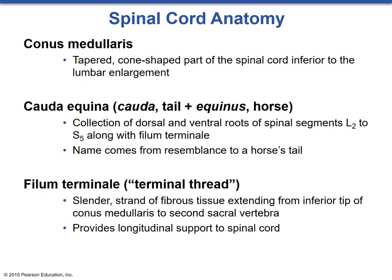Some additional anatomy on the spinal cord: the conus medullaris is the tapered cone-shaped end of the spinal cord found at the inferior end of the lumbar enlargement. The cauda equina is a collection of dorsal and ventral roots of spinal segments from L2 to S5, along with the filum terminale. The name cauda equina comes from its resemblance to a horse's tail. The filum terminale is a slender strand of fibrous tissue extending from the inferior tip of the conus medullaris to the second sacral vertebrae — it is connective tissue, not nerve tissue, providing longitudinal support to the spinal cord.